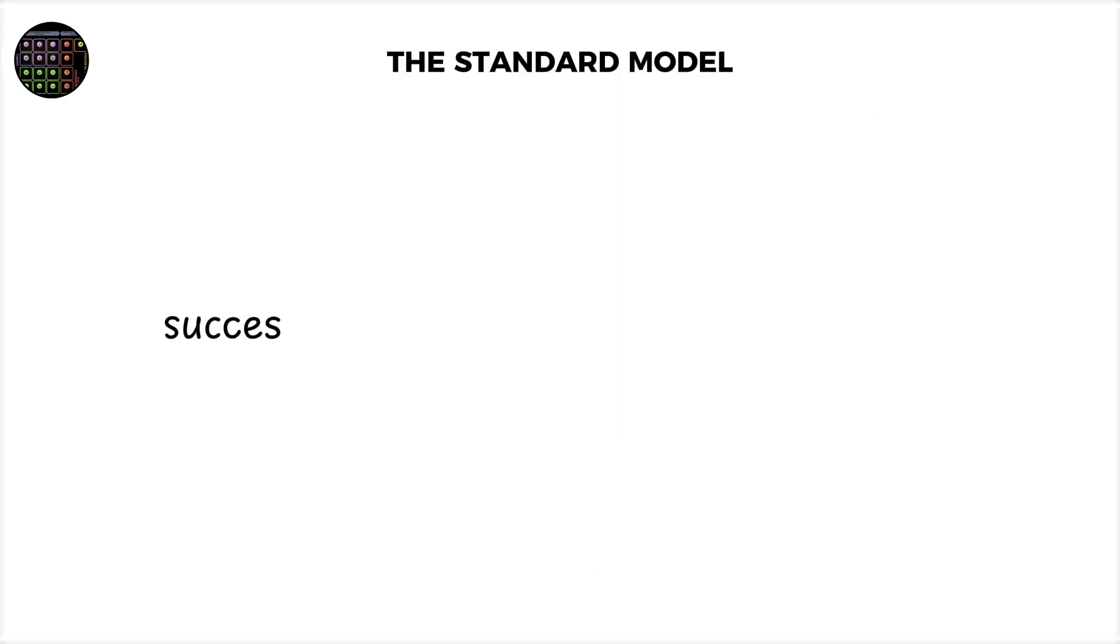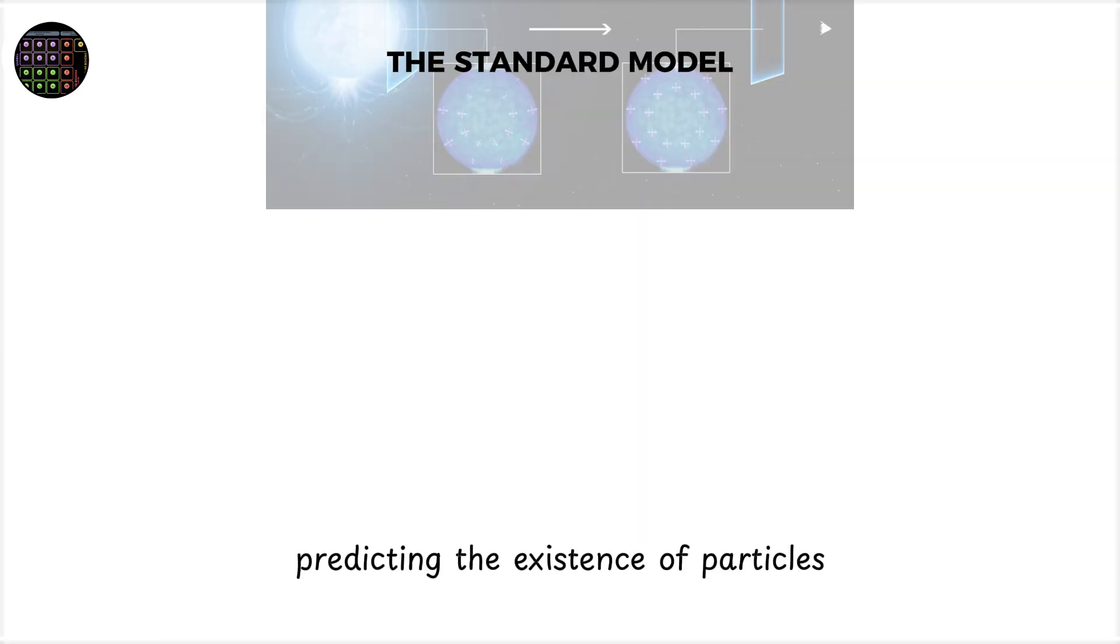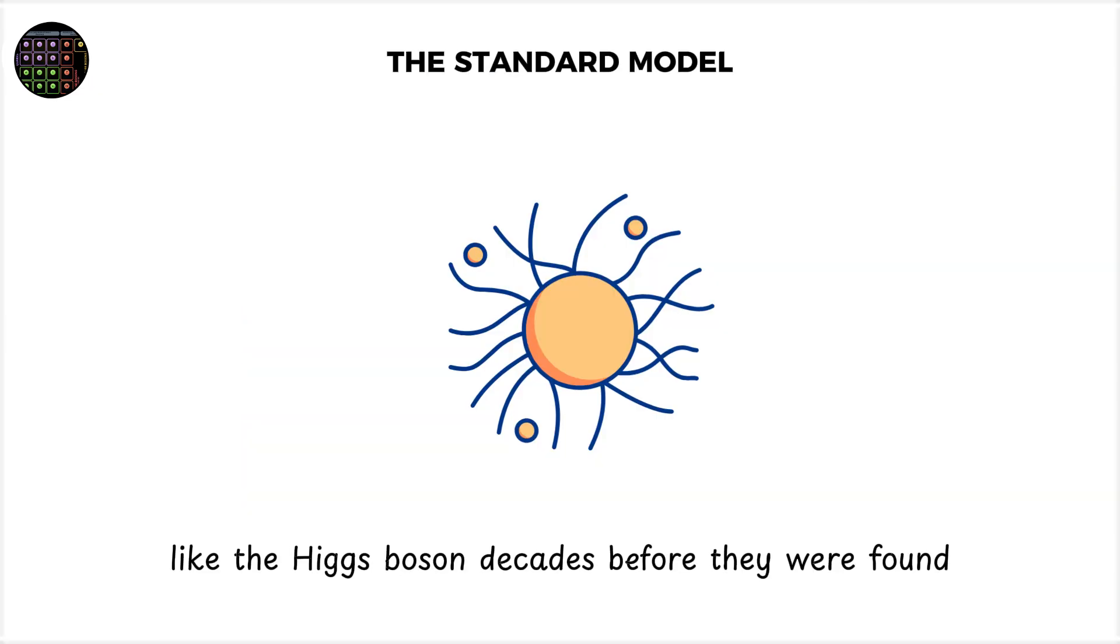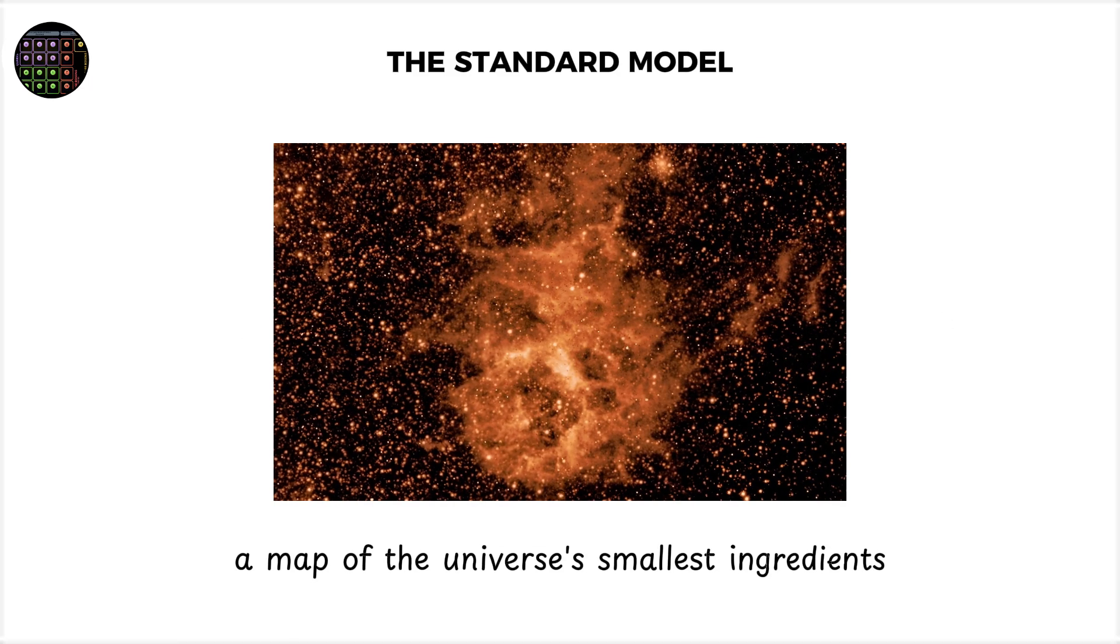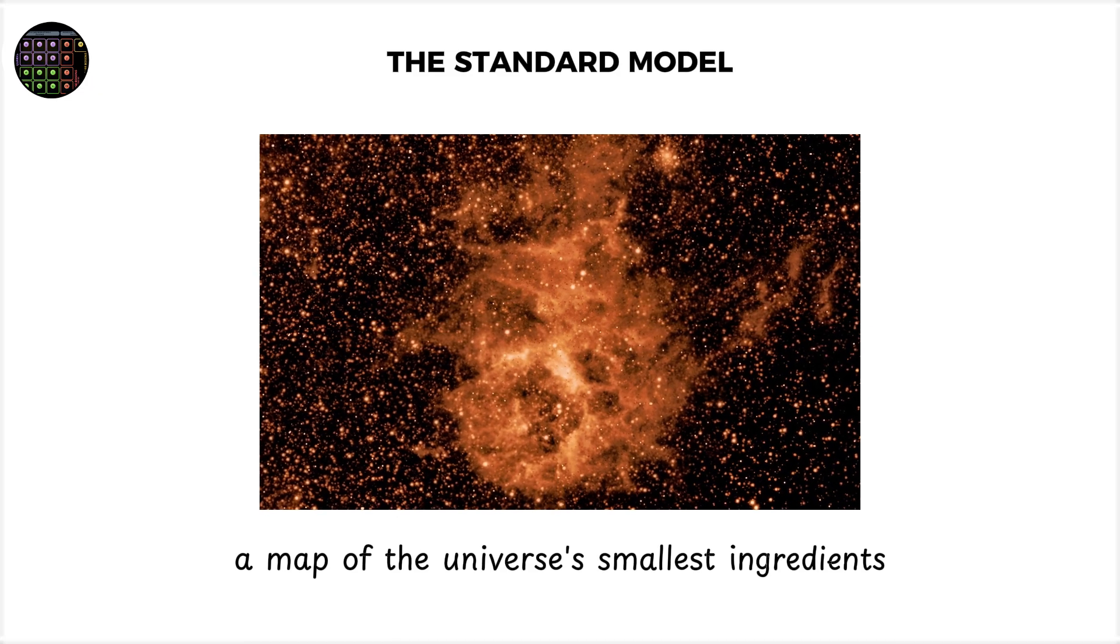The Standard Model successfully explains nearly every particle physics experiment ever done, predicting the existence of particles like the Higgs boson decades before they were found. It is, in many ways, the periodic table of the subatomic world, a map of the universe's smallest ingredients.